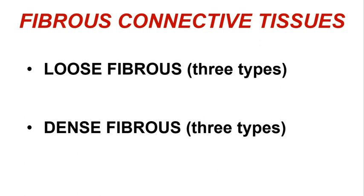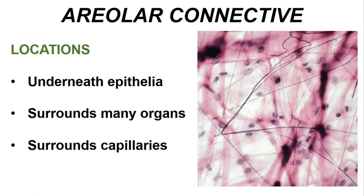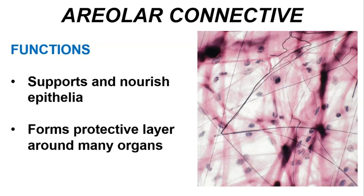Areolar connective tissue is the most widely distributed of the connective tissues in the body. It is found underneath most epithelial tissues, surrounds many organs, and forms a delicate wrapping around capillaries. It functions to support and nourish epithelial tissues because it contains a lot of small capillaries, allowing nutrients and oxygen to diffuse to the epithelial tissues. Around other organs, it forms a protective layer.